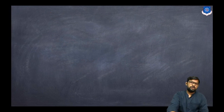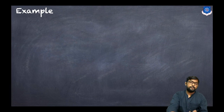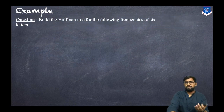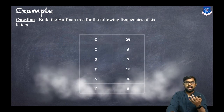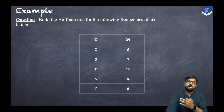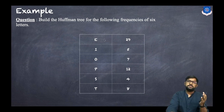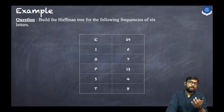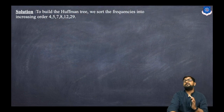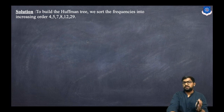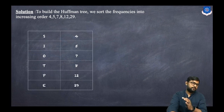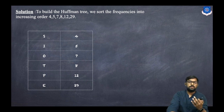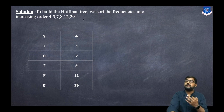Now let us discuss Huffman coding. The question is: build the Huffman tree for the following frequencies of six letters — e, i, o, p, s, t — with frequencies 29, 5, 7, 8, 12, and 4 respectively. The first step is to sort the frequencies into increasing order: 4, 5, 7, 8, 12, 29 — corresponding to letters s, i, o, t, p, e.